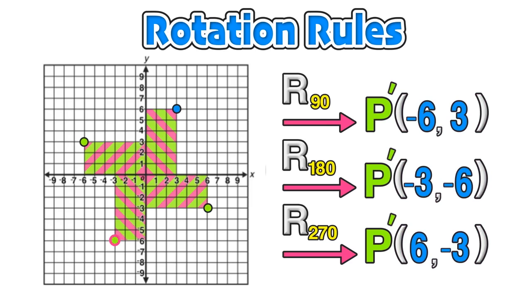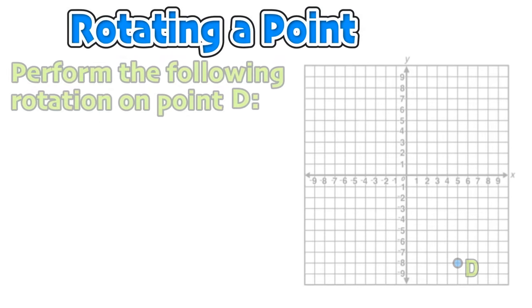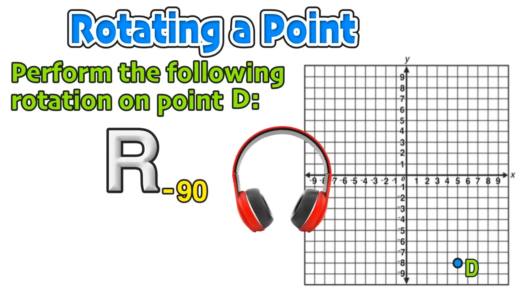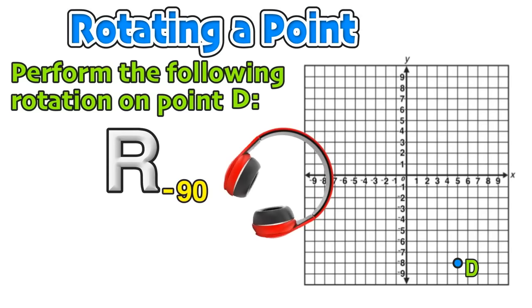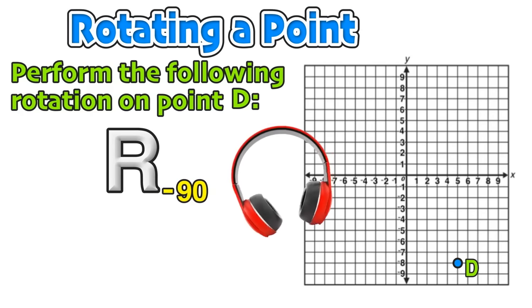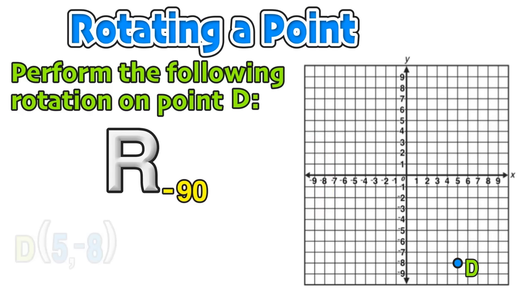If you don't think that's pretty cool, I don't know what to say! Moving on to our next example, we're going to rotate a point again — this time a negative 90-degree rotation, meaning we're moving in a clockwise direction.